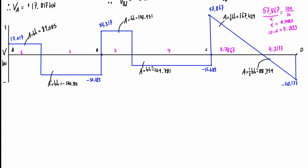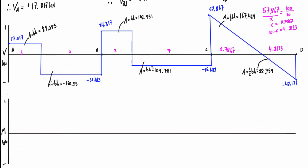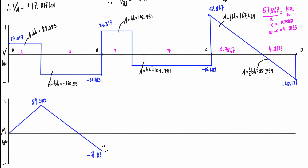Constant shear sections give linear changes on the bending moment diagram; linear shear sections give parabolic changes on the bending moment diagram. Starting at zero at the left end of the beam, the bending moment increases linearly by the area of 89.085. Then subtracting the next area: 89.085 minus 160.915 brings us down to negative 71.83.